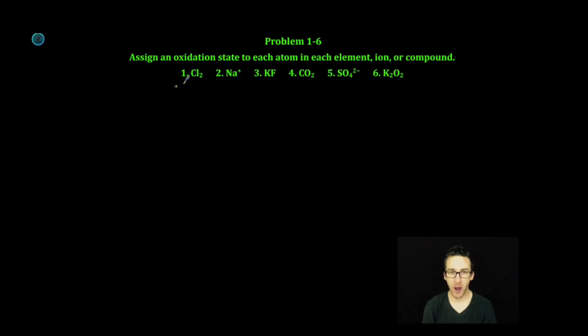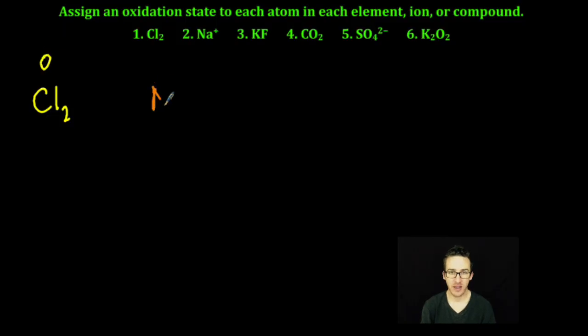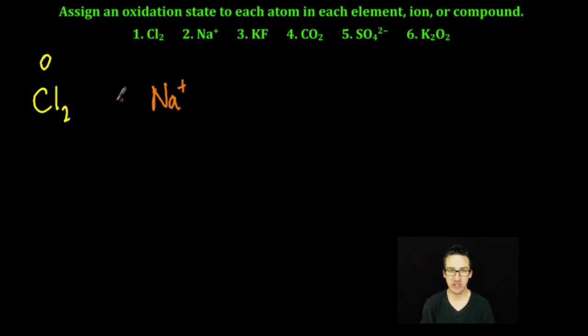Let's take a look at problem number one. We've got some chlorine — it's an element, so the oxidation number is zero. Number two, we've got sodium ion. It's a monatomic ion, so its oxidation number is plus one.